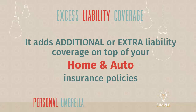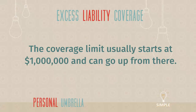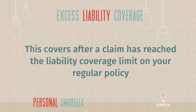This is where people get confused — a personal umbrella sits on top of both your home and your auto liability coverage limits. Your home policy covers up to its coverage limit, but if something happens and the cost goes above that limit, the personal umbrella kicks in. The nice thing is it goes over both home and auto. Coverage limits on an umbrella usually start at one million dollars and can go up from there, offering a ton of excess liability coverage.